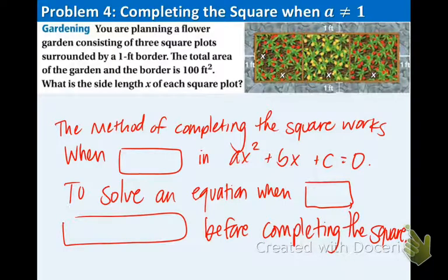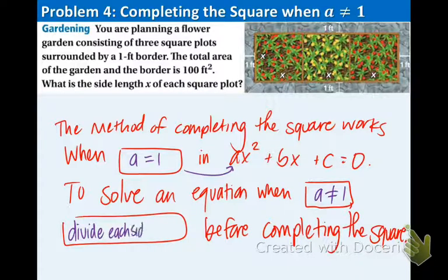The method of completing the square works when a equals 1. Remember the a value is the number in front, so in this equation a is 1. To solve an equation when a does not equal 1, a.k.a. every other number besides 1, we must divide each side by that a value and then complete the square. So remember, if that a value is not 1, you must divide by that number to both sides of the equation and then use that complete the square method that we talked about.